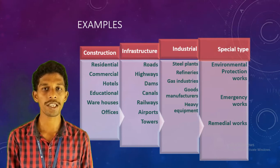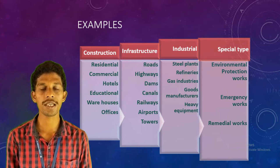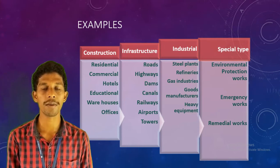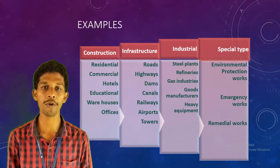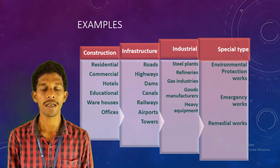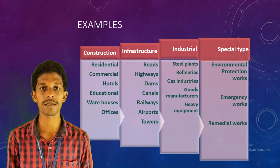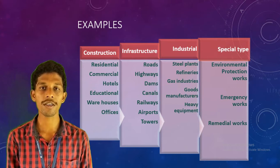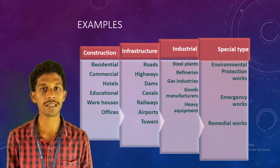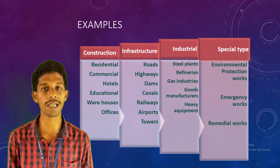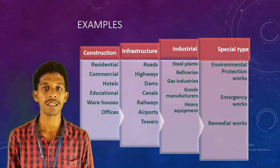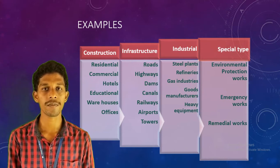The second classification is infrastructure projects. Infrastructure is nothing but bridges, railways, airports, along with dock harbors and road networks — all these types of projects are included in this particular infrastructure classification.